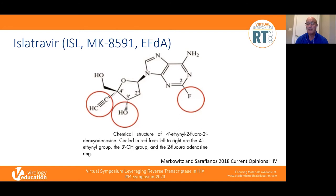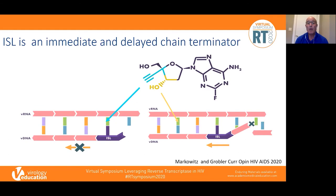I want to highlight three structural features of this drug: first, a 4-ethynyl group; second, a fluoride group at the second ring; and a 3-prime hydroxy group. Remember, as I mentioned earlier, all the nucleoside RT inhibitors lack a 3-prime hydroxy group — that's how they act as chain terminators. So the mechanism of action of Islatravir is quite different from NRTIs.